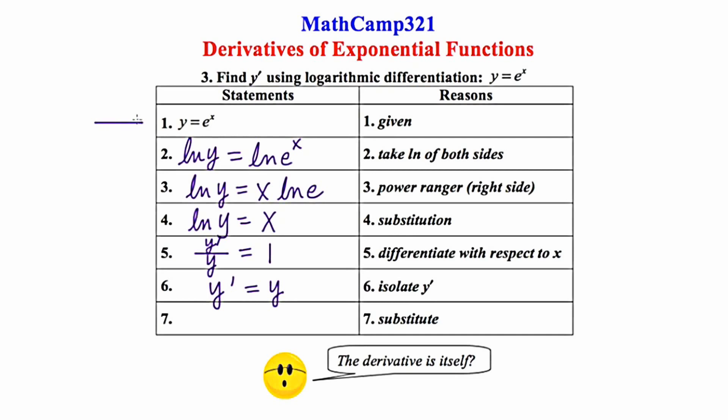y is e to the x. So y prime ends up equaling y, which is, in fact, e to the x. And you see this little emoticon at the bottom, and he says, the derivative is itself. The derivative ends up being exactly what we started with.